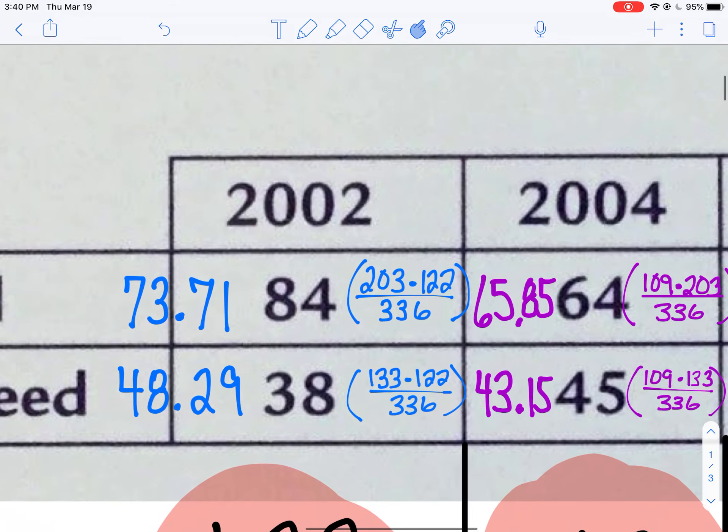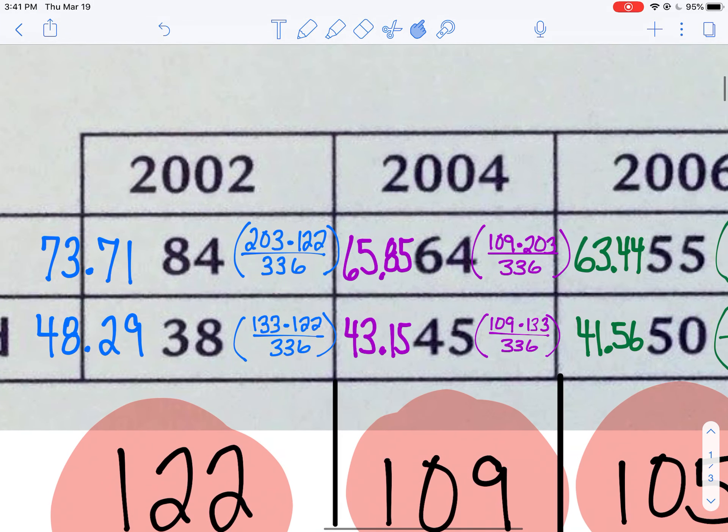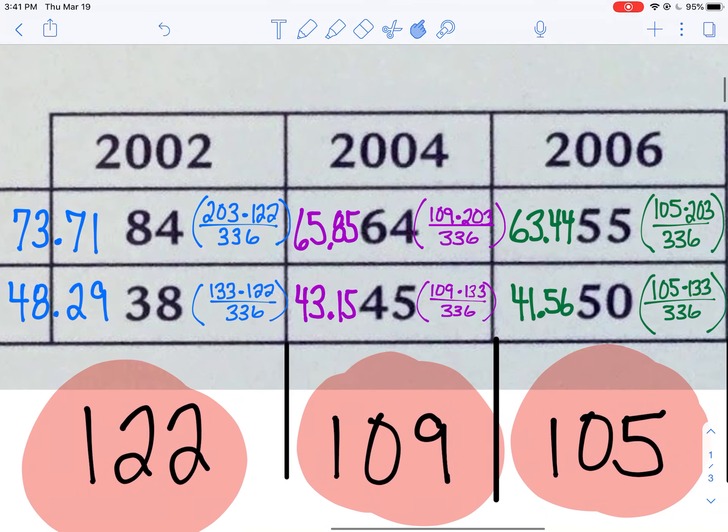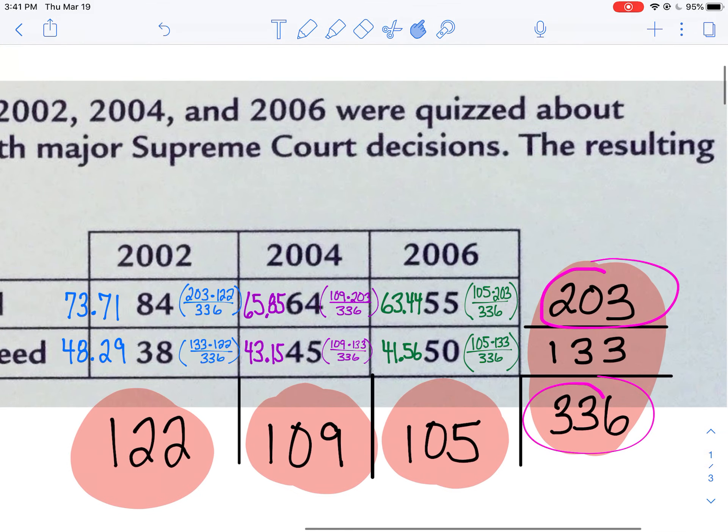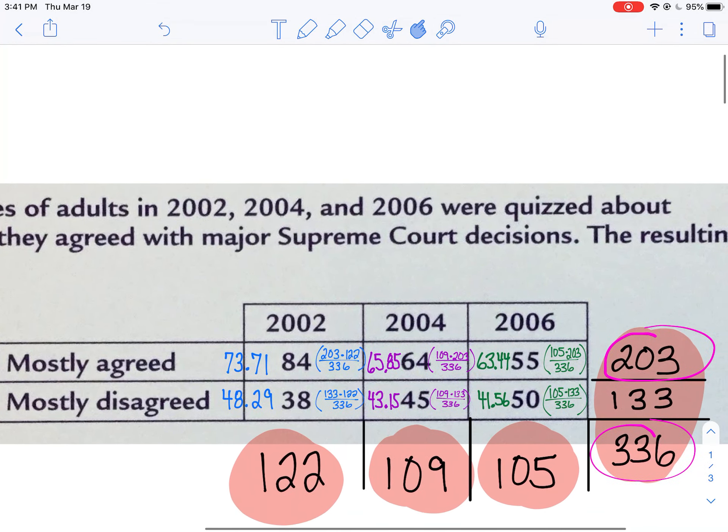How did I get these? Row total times column total divided by the total number sampled. Why? I get that question too. Why doing row times column total and then dividing by the total?